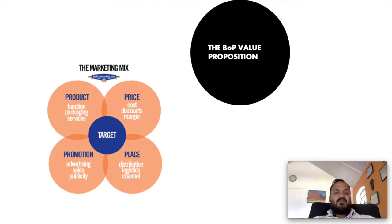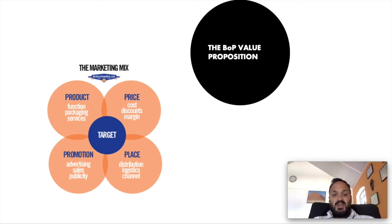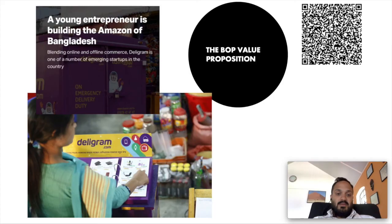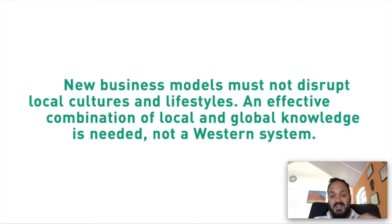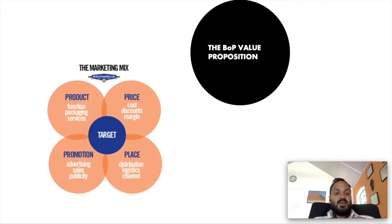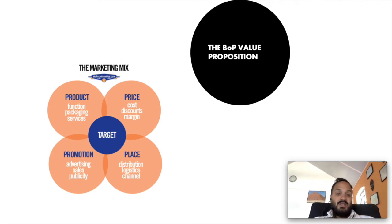This ties in really well to the concept of the four Ps — product, price, promotion, and place. If we look at the previous slide's framework of awareness, access, affordability, and availability, it maps very nicely onto the four Ps. Even within the BOP market, we need to think carefully about the value proposition.